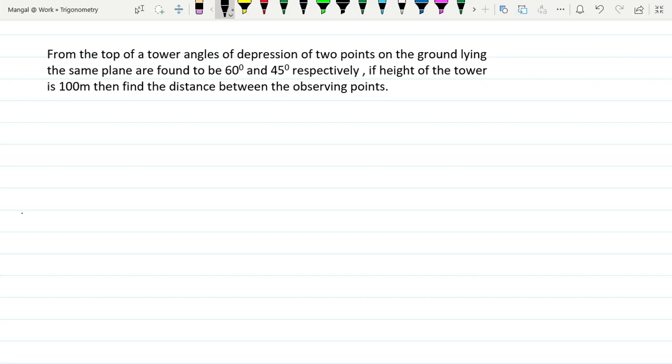From the top of a tower, angles of depression of two points on the ground lying on the same plane are found to be 60 degrees and 45 degrees respectively.